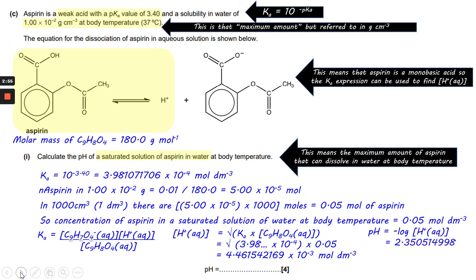So if I plug that into the pH equals minus log H+ concentration expression, that gives me 2.350514998. Now the convention is only two decimal places is used when quoting pHs, so I simply change that to 2.35 to get my answer.